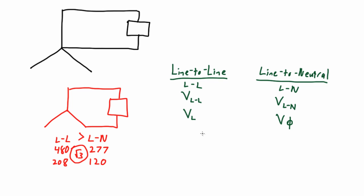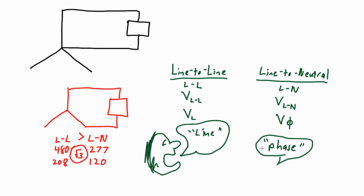And line-to-neutral can be notated with all of these options. Saying line-to-line or line-to-neutral can at times be a mouthful, so often they're just called line and phase. And sometimes, probably inappropriately, they're called just line and neutral. But to keep those distinguished, we're going to try and keep consistent here with line and phase, or line-to-line and line-to-neutral.